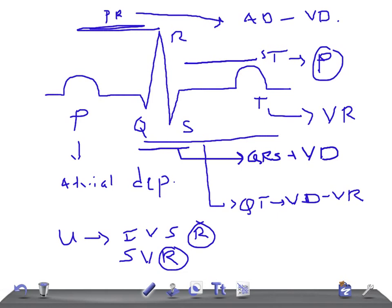Two important points: the depolarization of the SA node and AV node does not produce any detectable wave on EKG — EKG is unable to detect the depolarization of SA and AV nodes. That's a brief overview of the causes for wave formation in EKG. Thank you for watching.